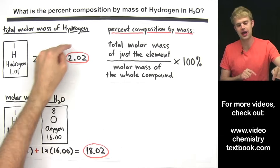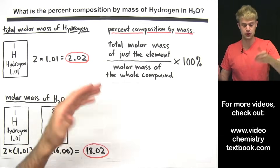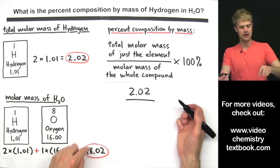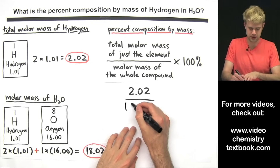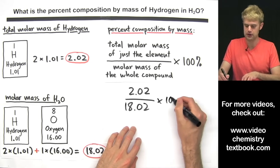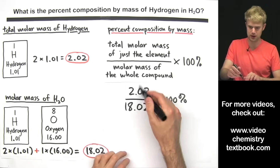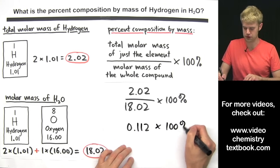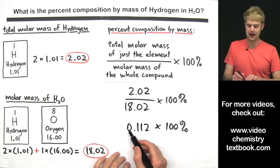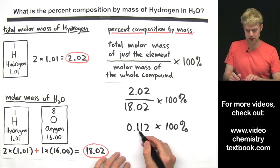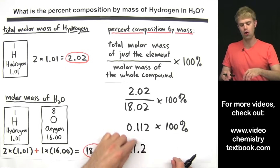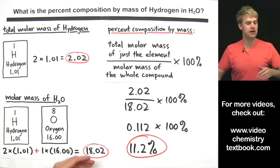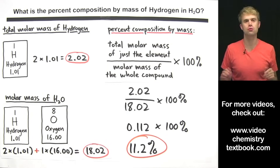Now we plug the values into the equation. The total molar mass of just hydrogen is 2.02 on the top, and the molar mass of the whole compound, water, is 18.02 on the bottom, times 100%. Doing the division first gives 0.112, rounded to three significant figures. Multiplying by 100% moves the decimal two spots to the right, giving us 11.2% — the percent composition by mass of hydrogen in H₂O.